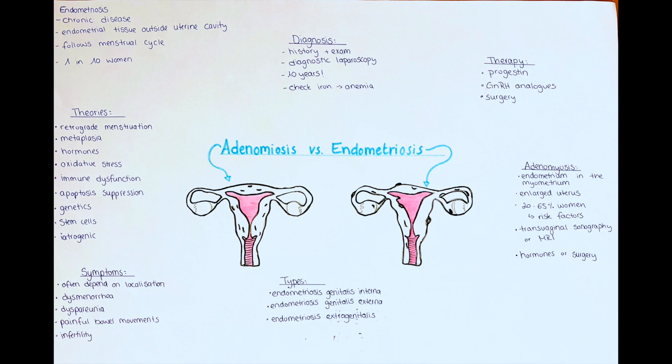To diagnose a patient with endometriosis we have to obtain a thorough medical history and see if the patient's symptoms indicate a diagnosis of endometriosis. After that we have to do a diagnostic laparoscopy to rule out other diseases and to be able to take biopsies of the areas where we suspect endometrial tissue. The average time between the first symptoms and the diagnosis is 10 years.